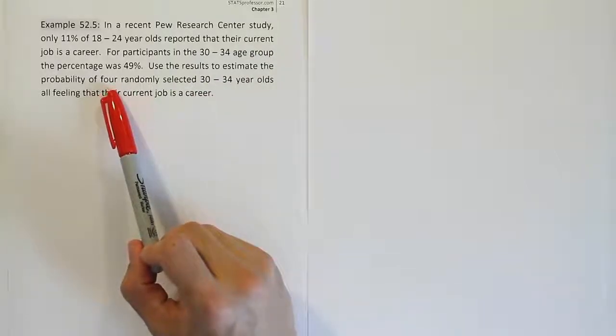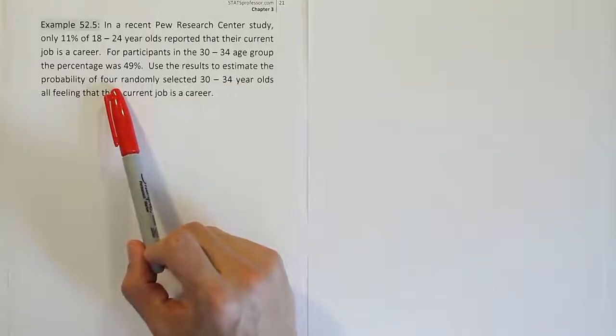The fact that we're taking more than one 30 to 34 year old makes this a multiple event problem. If I take just one 30 to 34 year old, that's just one event. But here I'm taking four people, so there's four separate events. Any time you have more than one event, you're dealing with the multiplication rule of probability. We're going to have four separate fractions to represent each event and multiply them all together.